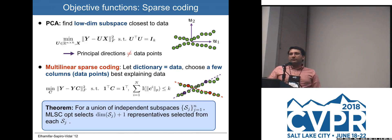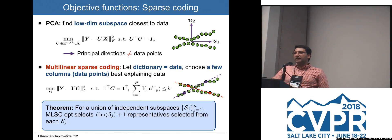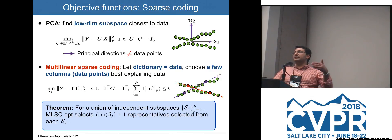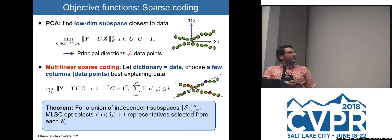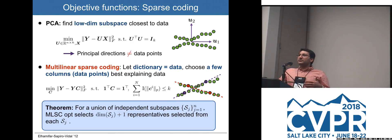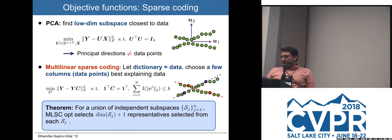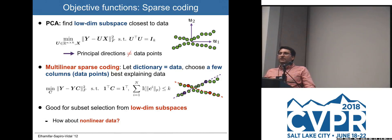For data lying in a union of subspaces, this optimization selects D+1 points from each subspace where D is the dimension of that subspace. For instance, with two lines in 2D, it selects two points from each line. This is a very good criterion when data lie in a low-dimensional subspace or a union of subspaces. But for more general cases where data comes from a nonlinear manifold, we need more flexibility.